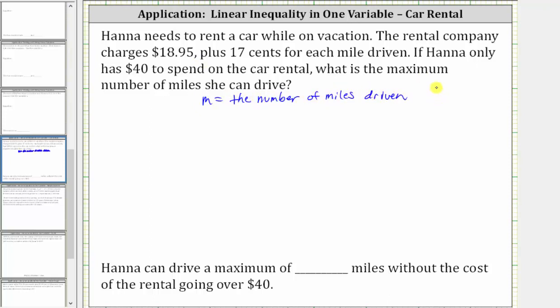And now let's write an expression for the total cost of renting a car. Again, the company charges $18.95 plus 17 cents for each mile driven, which in our case would be 17 cents times m. And therefore the expression for the total cost is 18.95 plus 0.17m.